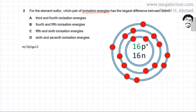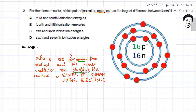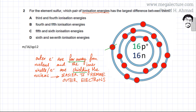Because of the larger distance and more shielding effect, it becomes easier to remove these outer electrons. Removing the first electron is the first ionization energy, and it would be relatively easy.